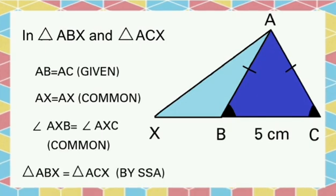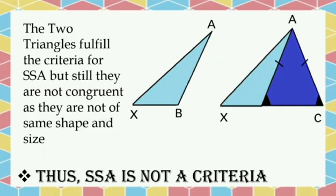Triangle ABX is congruent to triangle ACX by SSA. Now, we have proved both triangles congruent by SSA.